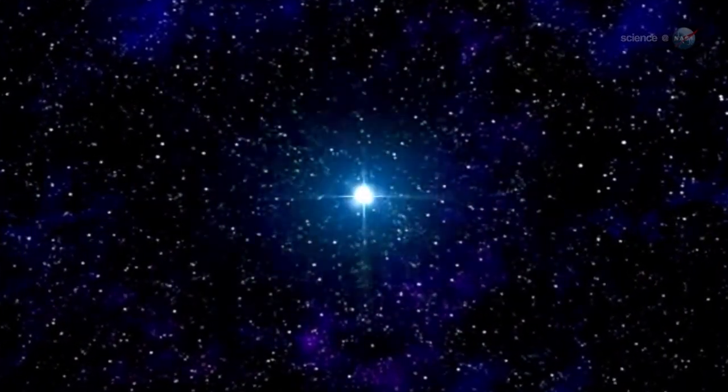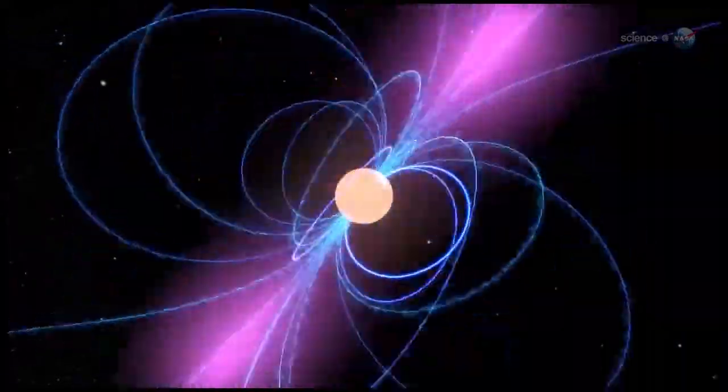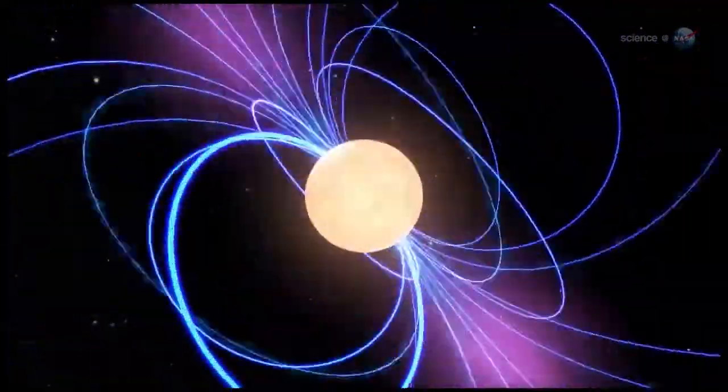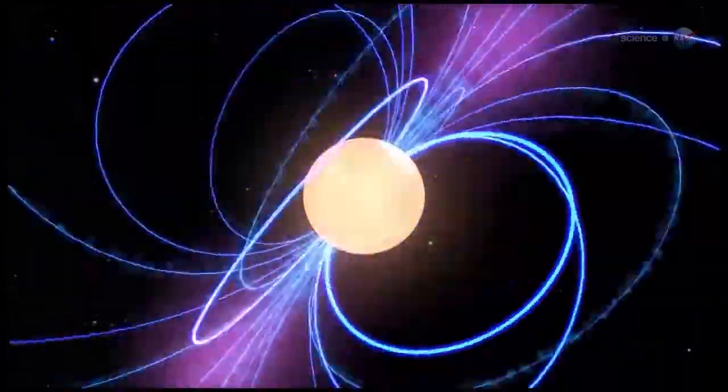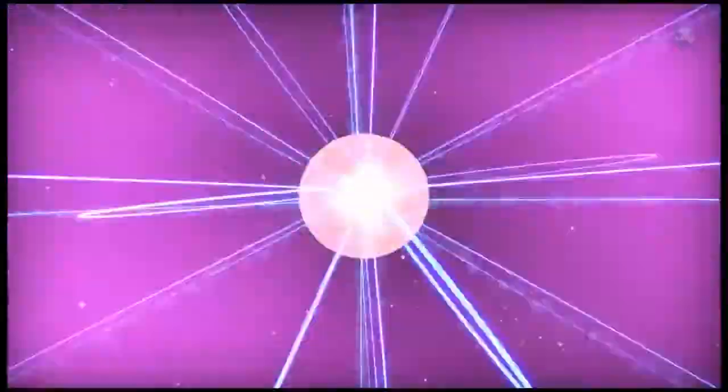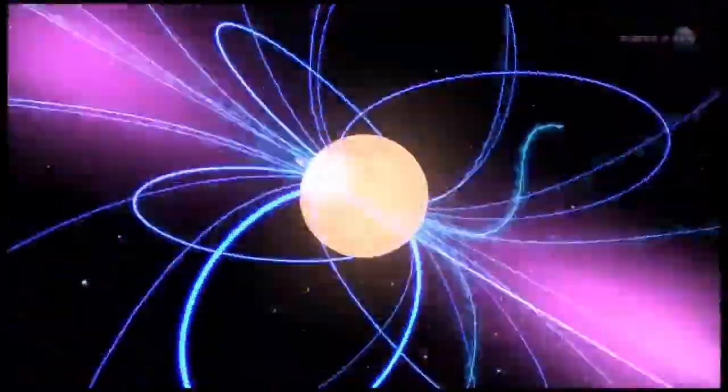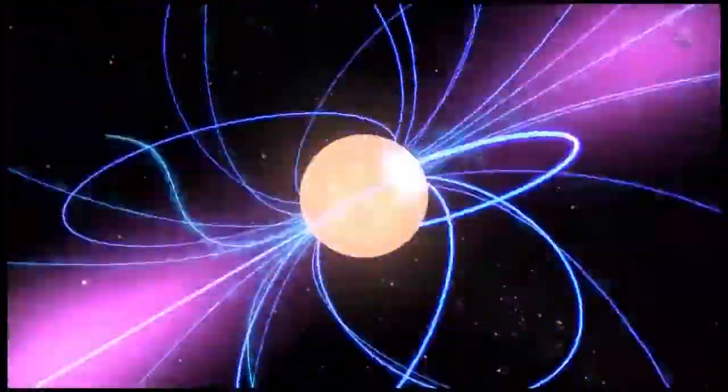Pulsars are strongly magnetized neutron stars formed in the aftermath of supernova explosions. They can spin on their axis thousands of times a second, flinging particles into space with fantastic energies that accelerators on Earth can't match. Among these particles are pairs of electrons and positrons.